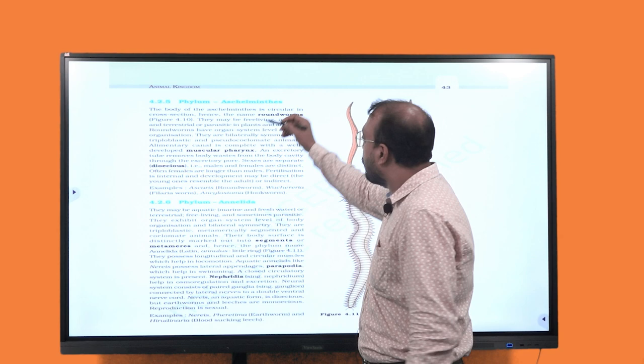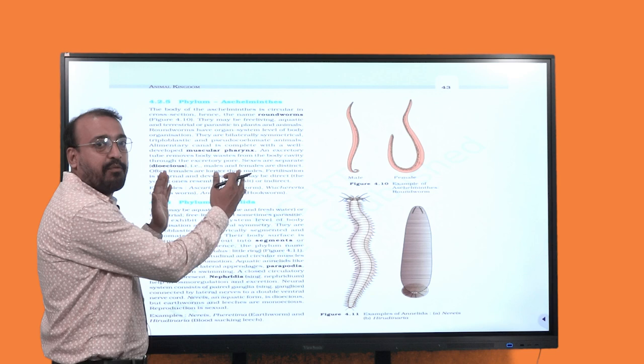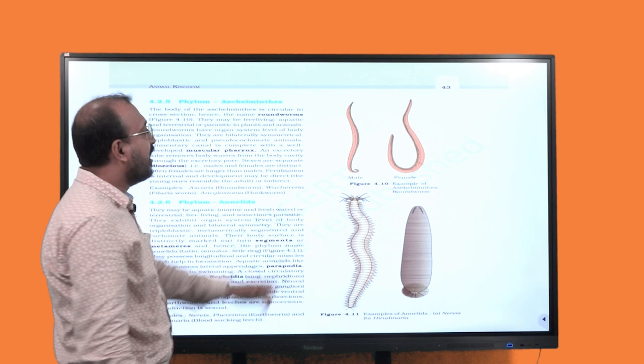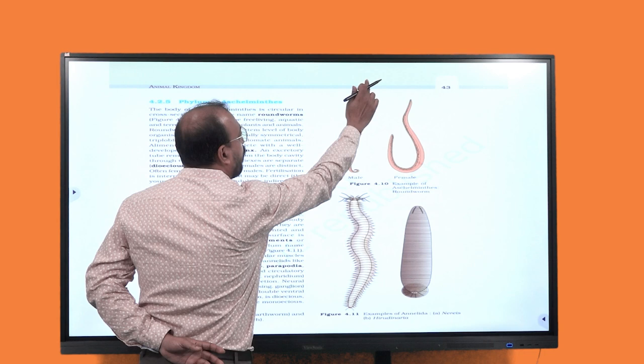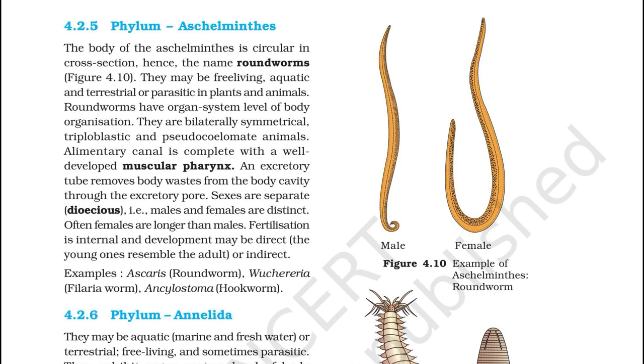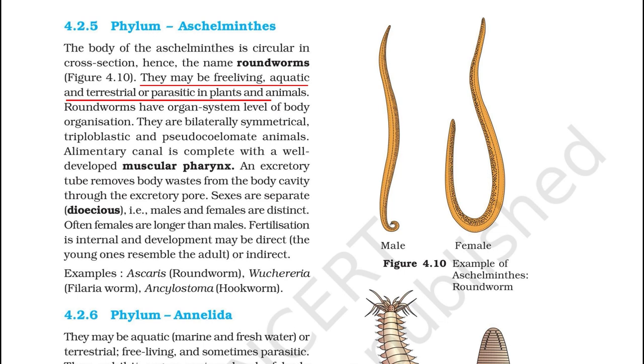To understand or to identify the correct answer, you need to go through these lines thoroughly. So see here, all this information you will be getting in Aschelminthes NCERT volume 1 page number 43. See, all this information, follow correctly to get the information line by line.